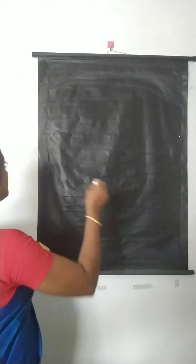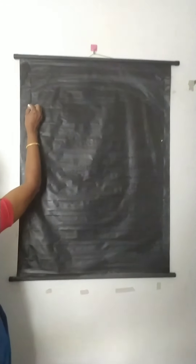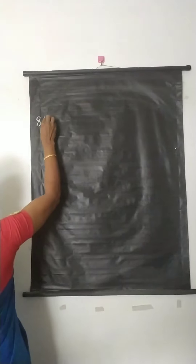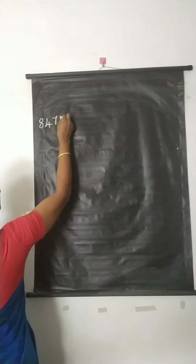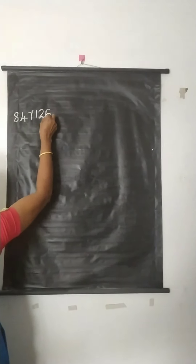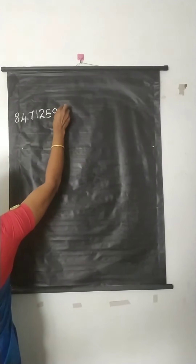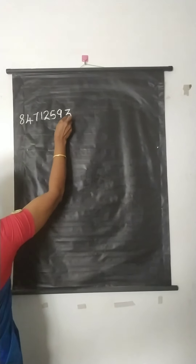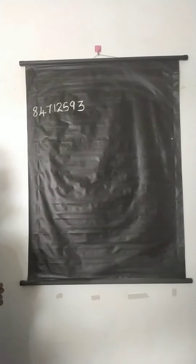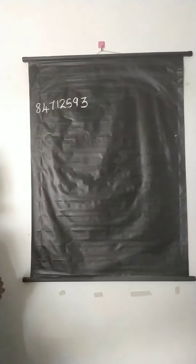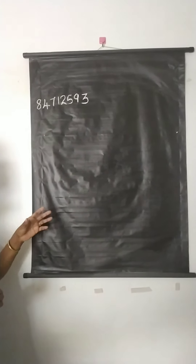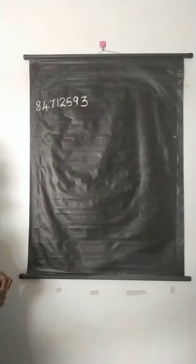Let's consider an example. We have the number 84712593, and we have to insert commas in this numeral.